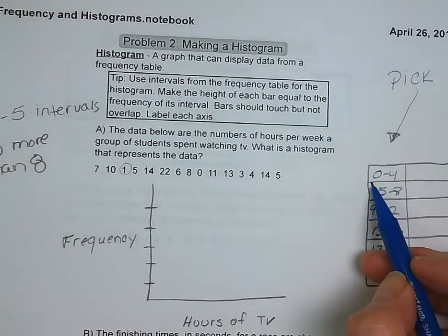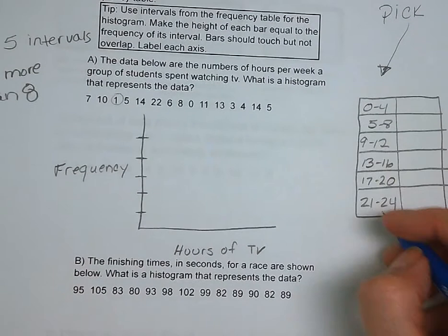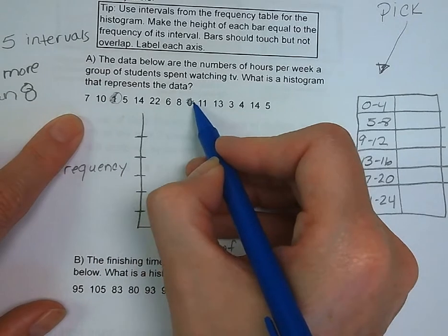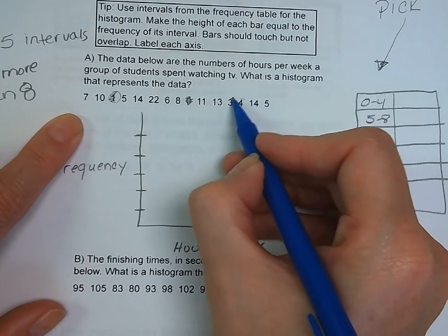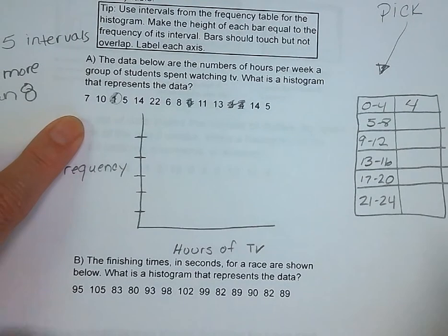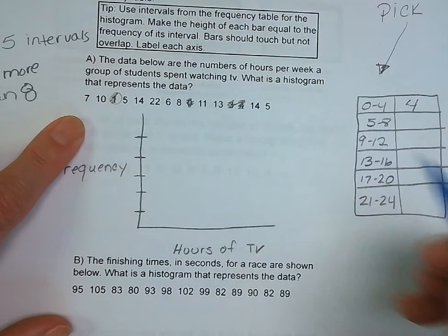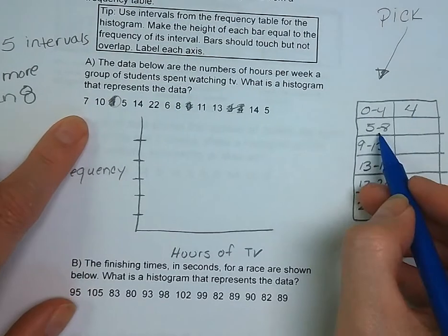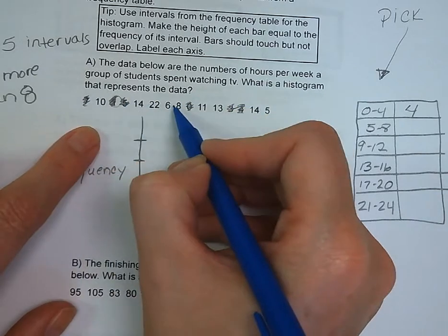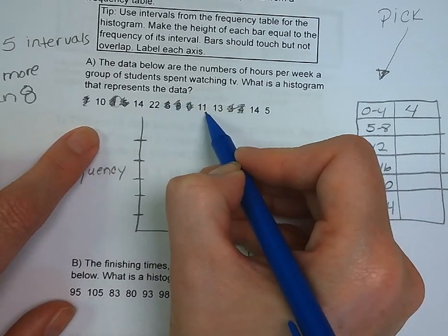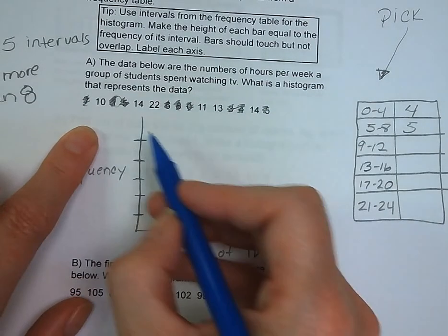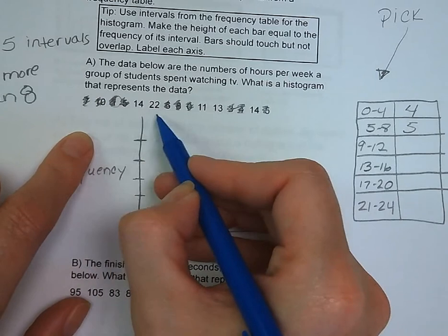Now we need to fill in our frequency table. How many are between 0 and 4? We've got 4. That's the count. 5 through 8, we've got 5. 9 through 12, 2. 13 to 16, 3. 17 to 20, we have none, and 21 to 24, we've got 1.